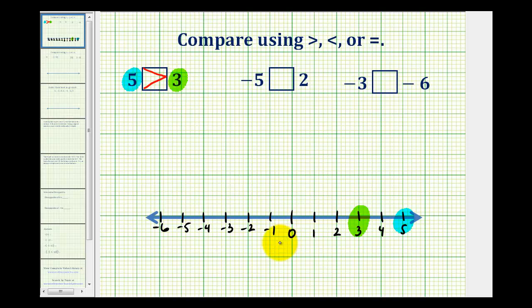The main thing to remember when comparing two integers on the number line is the larger number will always be on the right, and the smaller number will always be on the left. Now let's compare negative 5 to positive 2. Here's negative 5, and here's positive 2.